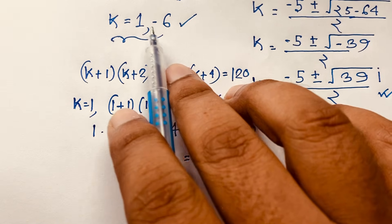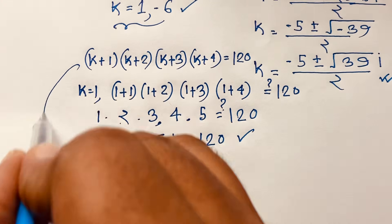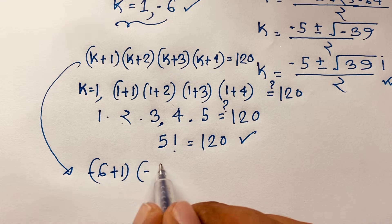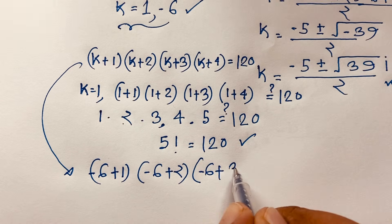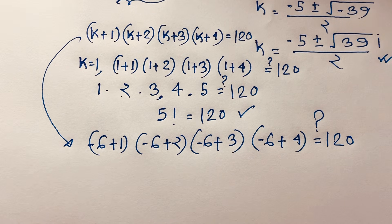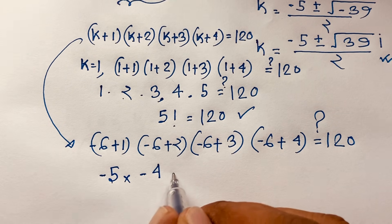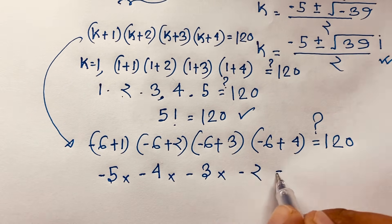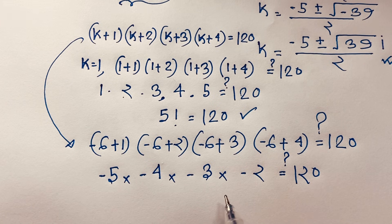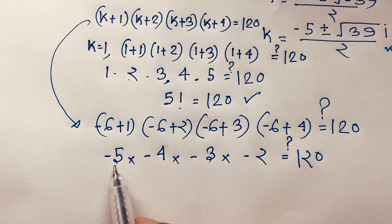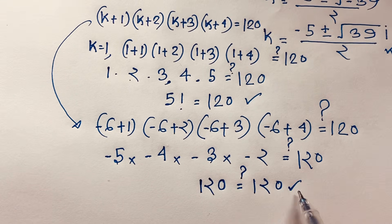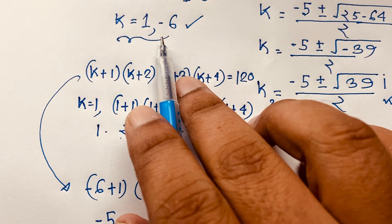Now let's verify the other real solution, k = -6: (-6+1)(-6+2)(-6+3)(-6+4) = (-5)(-4)(-3)(-2) = 120. There are four negative signs, so the product is positive. We get 2 × 3 × 4 × 5 = 120. Left-hand side equals right-hand side — verified! So our final answers are k = 1 and k = -6.